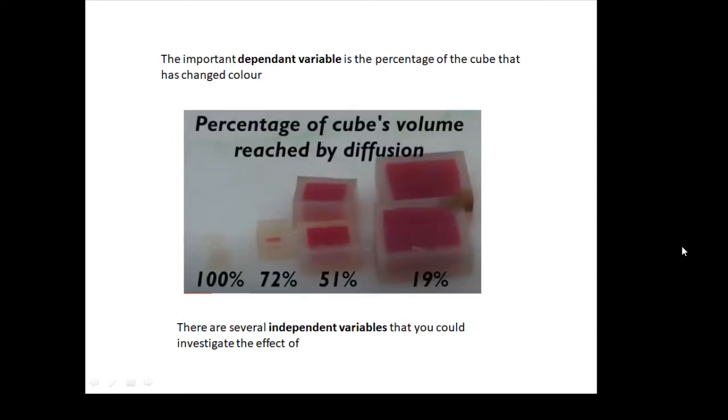One important dependent variable is the percentage of the cube that has changed color. If I put the cubes in acid for a certain amount of time—the same amount of time, because that's a controlled variable—then the dependent variable is the percentage that has changed color.